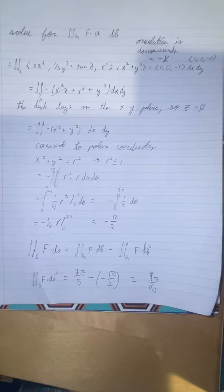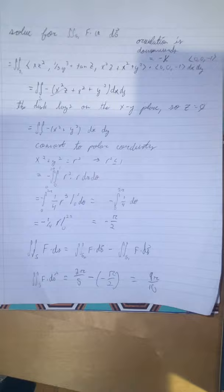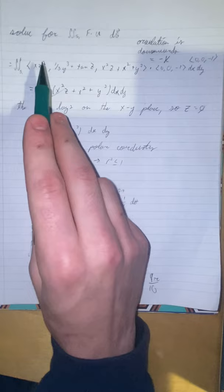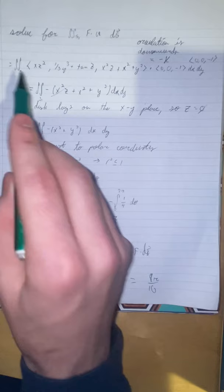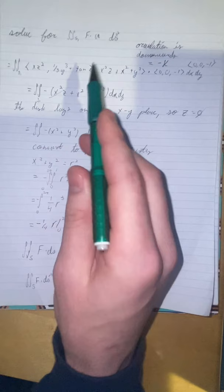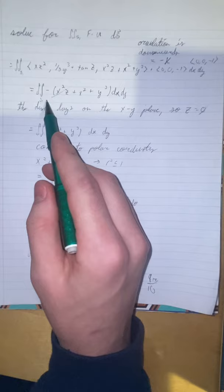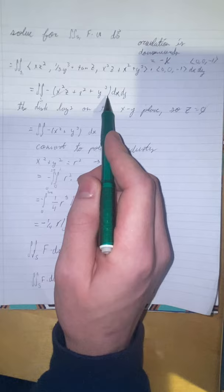Now for the last part, we're going to solve for f dot ds of s one. It's important here that you remember the orientation of this part is in the negative k orientation. So we're going to have f dot negative k ds, which is going to be equal to xz squared, one third y cubed plus tangent z, x squared z plus x squared plus y squared dot zero, zero, negative one, dx dy, which gives us double integral over s one of negative x squared z plus x squared plus y squared, dx dy. And then here, you can remember that since s one lays only in the xy plane,